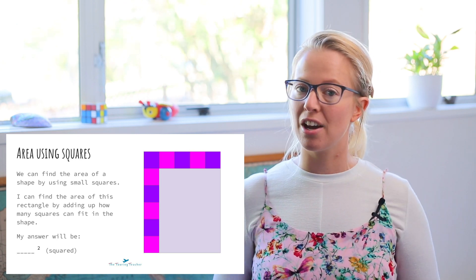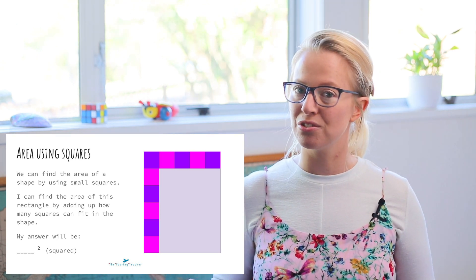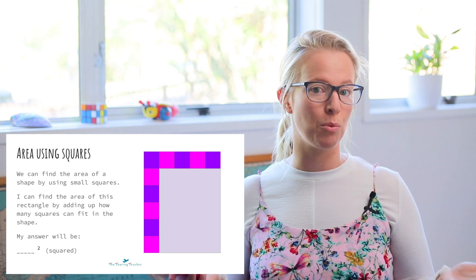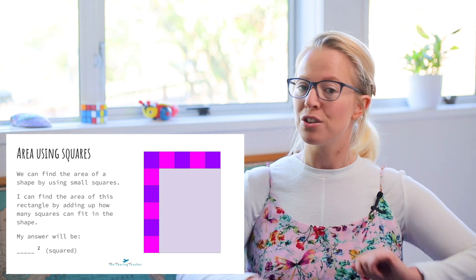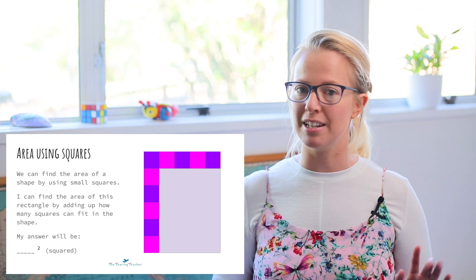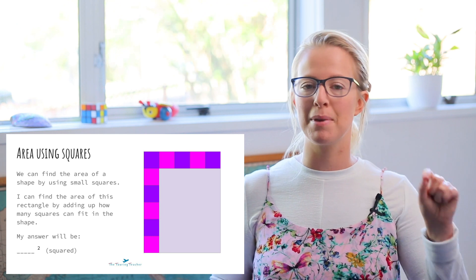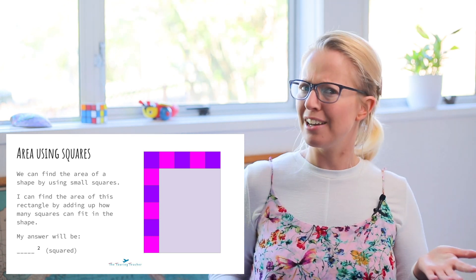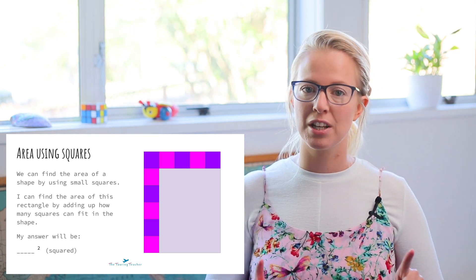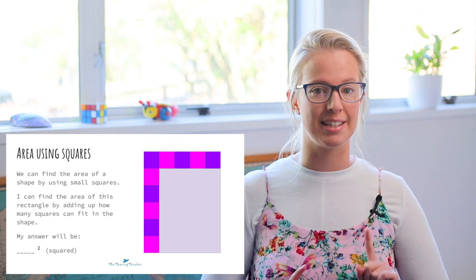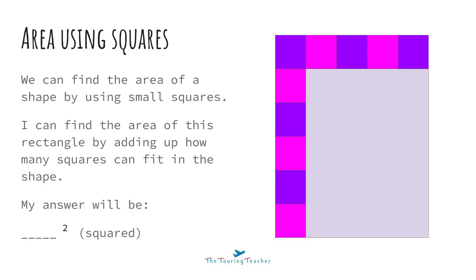So when we're finding the area of a 2D or two-dimensional shape, we can use different ways to figure it out. The first one is we can use small squares. You can see this picture up on the screen — we've got a rectangle with different purple and pink squares inside. It kind of looks like the Cheshire Cat from Alice in Wonderland. So we're going to use these squares to figure out the area of this rectangle by adding up how many squares can fit in the shape.